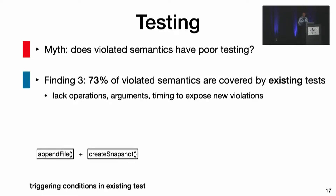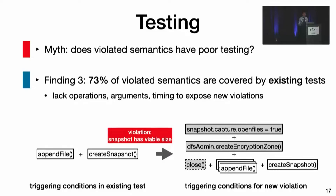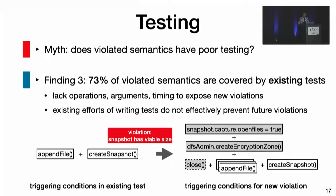For example, HDFS provides an API to capture snapshots of files, and this feature is covered by tests. But the tricky violation later exposed in production requires five different conditions to trigger. We also see that tests tend to address specific bugs instead of validating semantics generally.